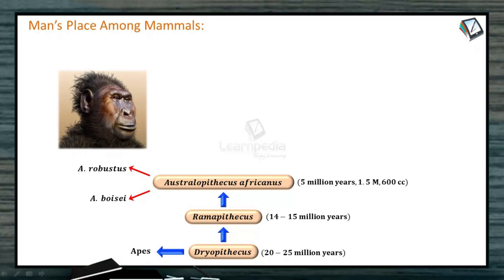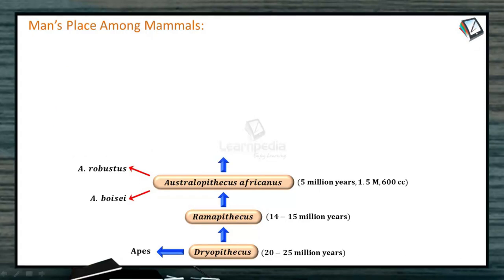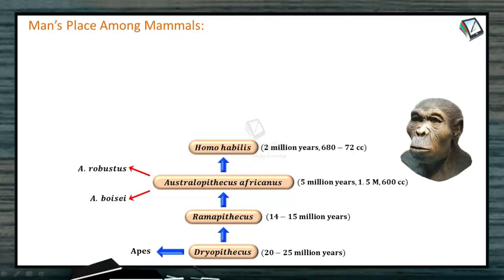Then another branch, Australopithecus boisei. Australopithecus then emerged to form Homo habilis, 2 million years ago. You can see that slowly the features of human beings are being evolved, but still the jaw structure, the brow ridges, the shape of the skull, and the upper jaw all resemble so much like the apes.